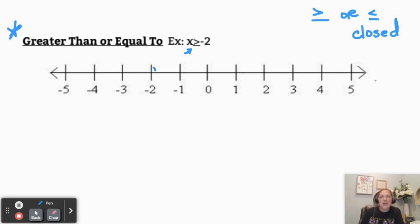I'm going to go to negative 2 on our number line, and I'm going to close that circle just by coloring it in. Now, let's look at our arrow to determine which way we're going to shade. Notice that our arrow is pointing to the right. That means we're going to shade to the right of negative 2 on our number line.